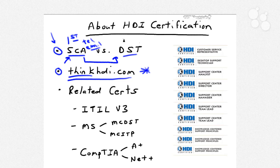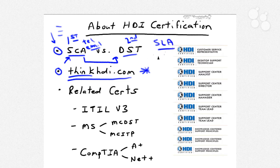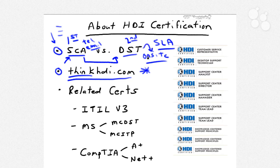By contrast, the desktop support technician could be looked at in the HDI schema as a level two or second-level support, whereas the SCA does general troubleshooting — the basics. If the problem scope is beyond the SCA's skill set or what's defined in the service level agreement and escalation rules, the SCA will typically elevate the issue to a desktop support technician who will attempt some kind of on-site support. If you're helping internal users, the DST would be dispatched to that user's desk; otherwise, the DST may establish a remote desktop connection to solve the problem.